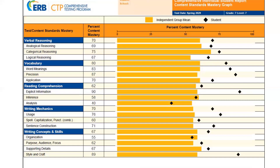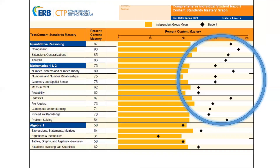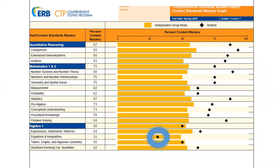Pages 3, 4, and 5 of the Comprehensive Individual Student Report provide the Content Standards Mastery Graph. This graph shows a visual picture of the results from page 2 of the report, displaying where your student lies with respect to the independent group mean. On page 4, you will see where the student has scored above average of the independent norm group mean in some subjects. By looking for outliers, you can find where your student excels and where their weaknesses are — for example, the student scored below average of the independent norm group in Equations and Inequalities of Algebra 1.